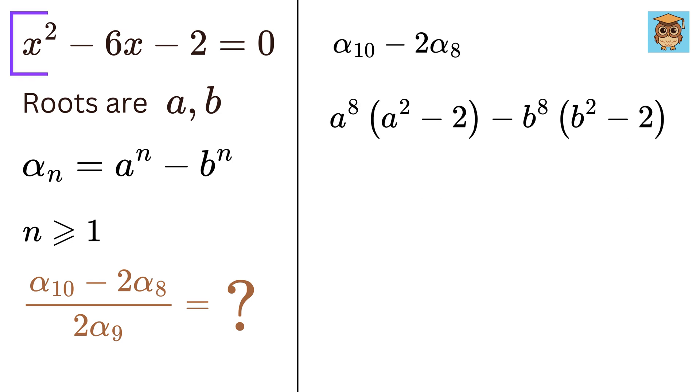Here comes the trick. Look at this equation. It has roots a and b, so both a and b will satisfy this equation. Thus from this, we get a² - 2 = 6a, and b² - 2 = 6b.